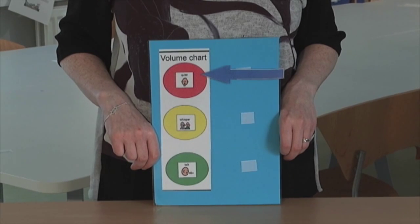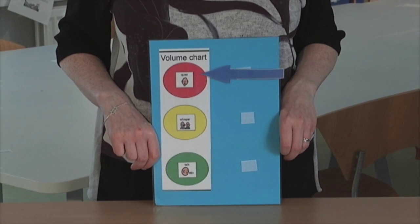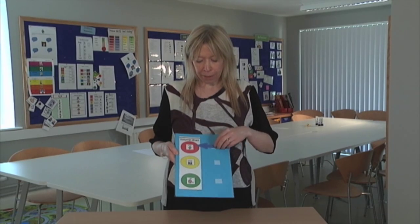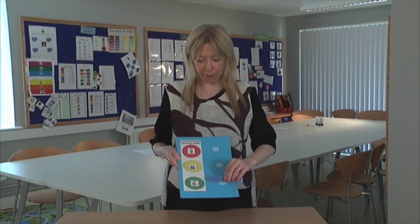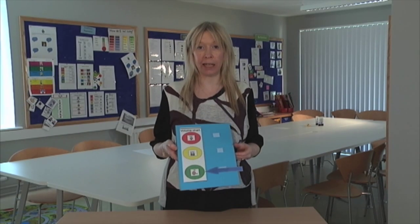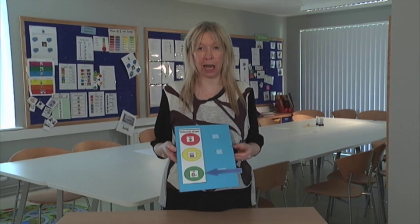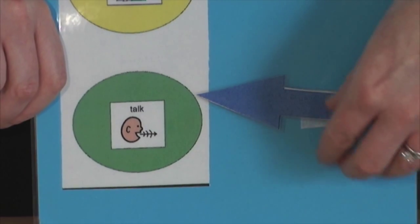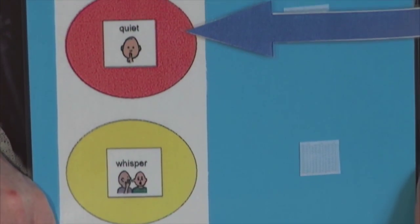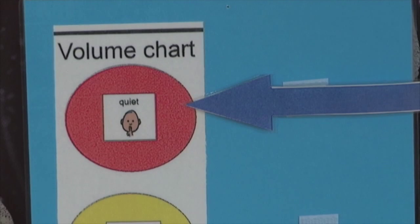This is an example of a traffic light system used to control the noise volume in a classroom. The teacher may have the arrow on green to indicate that the class can talk freely. However, she may notice one child who is sensitive to noise becoming overwhelmed by the volume in the classroom. The teacher can then move the arrow to red to indicate to the class that it's time to be quiet.